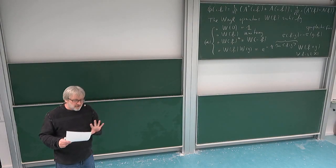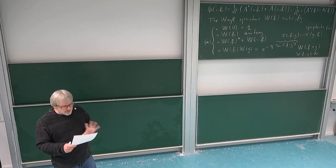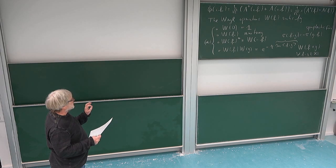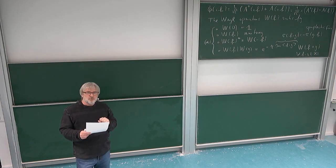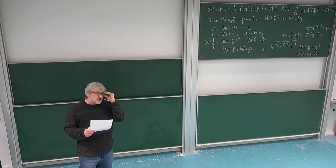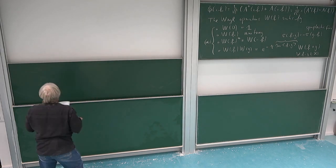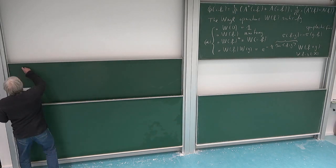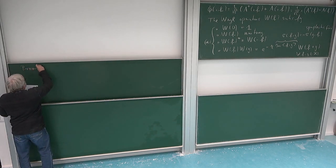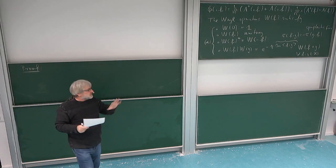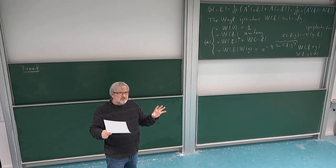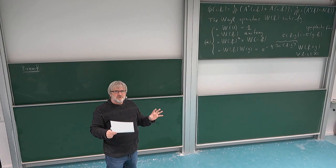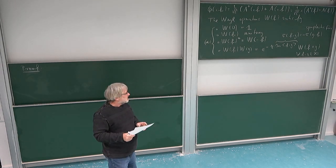I erased the theorem, but I hope you still remember. So let us do the proof that the Weyl relations determine the C*-algebra. So we have operators W and W-twiddle which satisfy those relations, and we want to see that the C*-algebras which they generate are isomorphic.